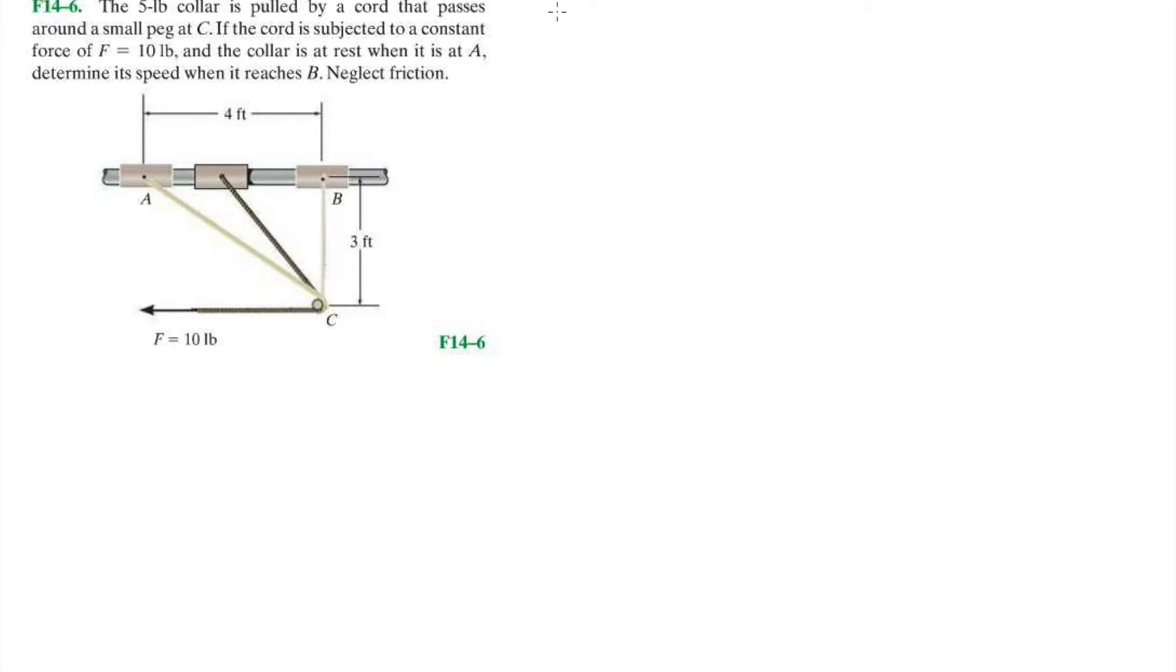So we know T1, the initial kinetic energy, is 0. T2 is unknown. We're trying to get VB, right?